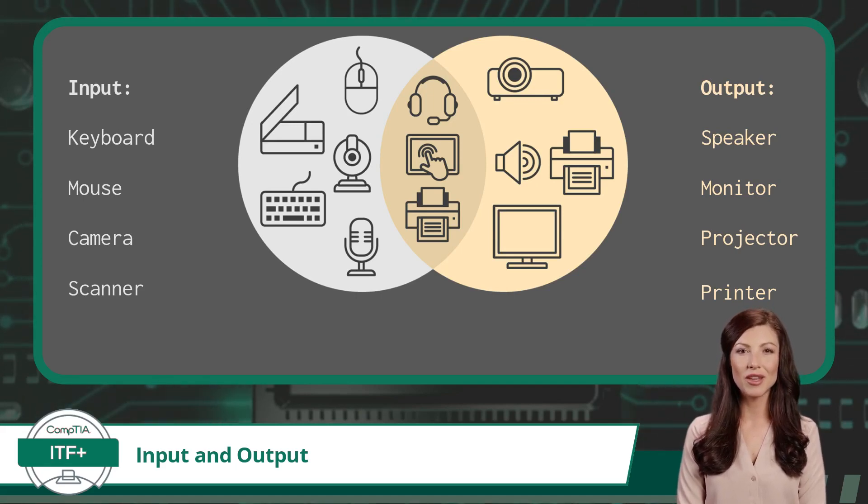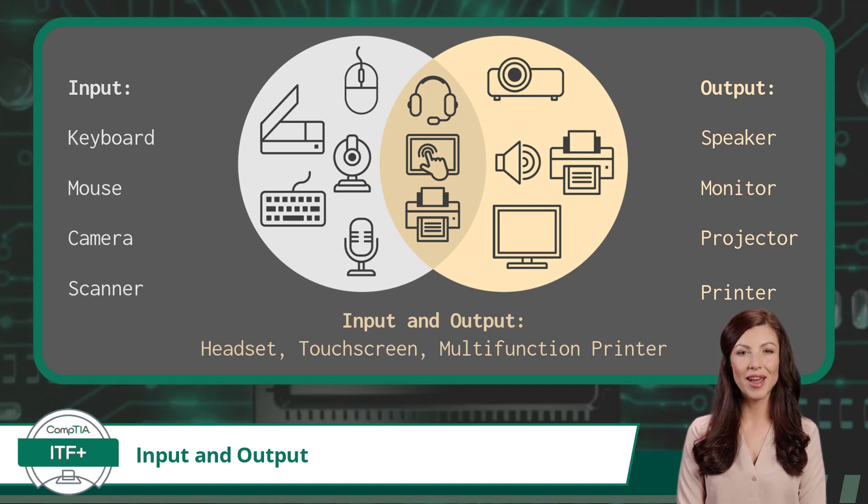Some devices can perform as both an input and as an output device. These devices include a headset which inputs sound data through a microphone and outputs data through a speaker, a touchscreen display which inputs a user's hand movements or gestures and outputs visual data, and a multifunction printer which can input image data through its scanner functions and output image data through its printer functions.